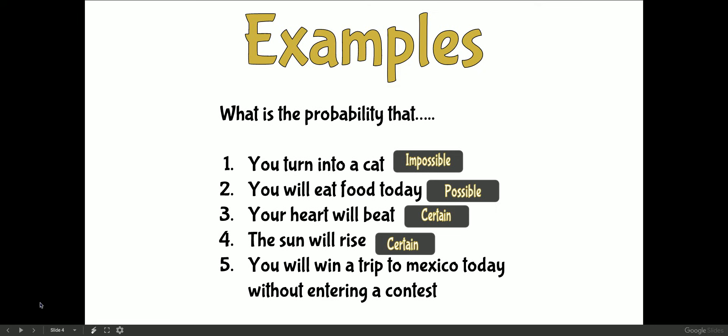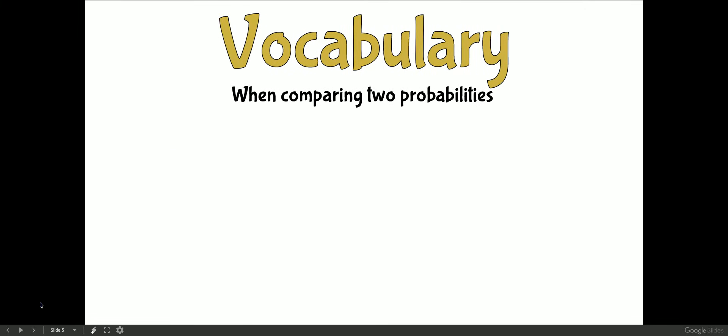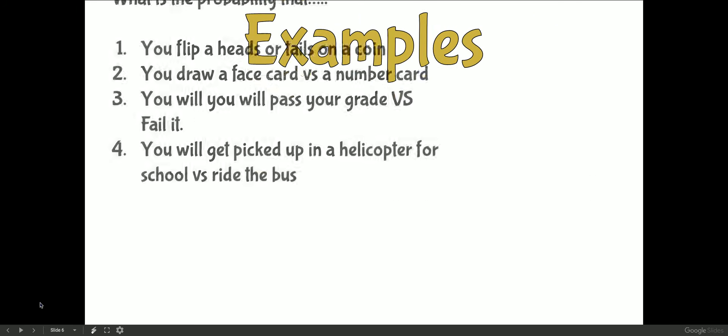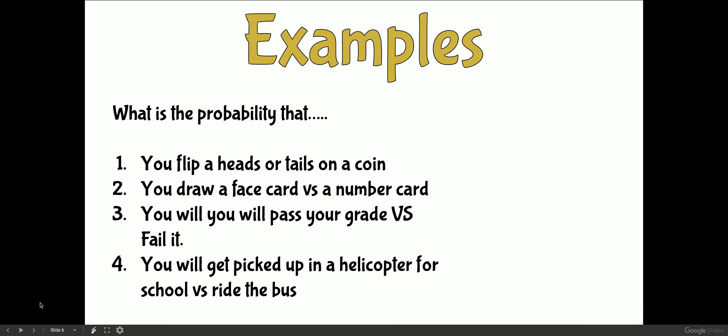You will win a trip to Mexico today without entering a contest? That's pretty impossible, it's not gonna happen. Now there's also some vocabulary we need to know for when we're comparing two different possibilities. Is something less likely to happen, equally likely which means the chances are exactly the same, or more likely? Some examples we can look at: what is the chance that you will flip heads or tails on a coin? It's equally likely - there's one head, one tail. In theory, the chances should be exactly equal.